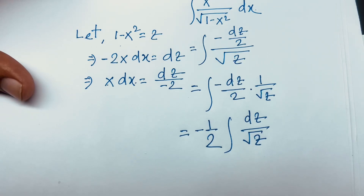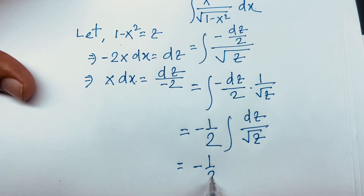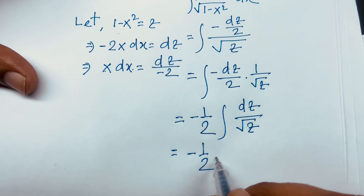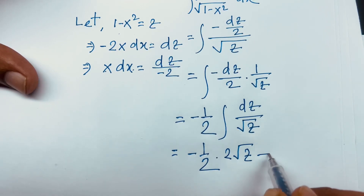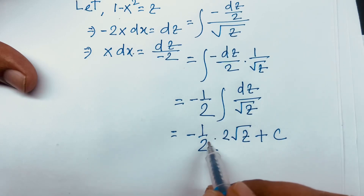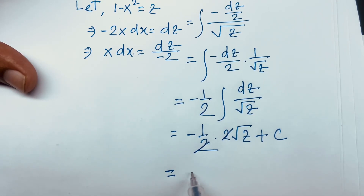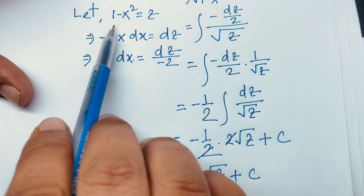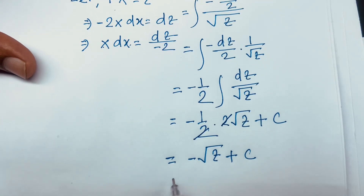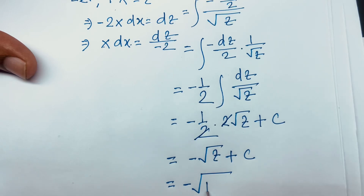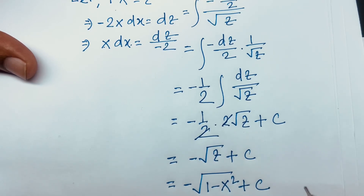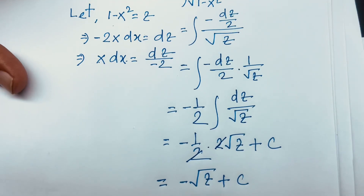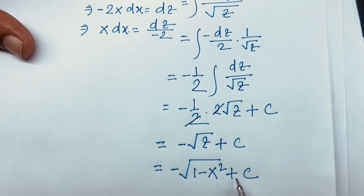Then I can say easily: here is minus one half, and the integral of dz over square root z equals 2 square root z plus c. So these two cancel, and we find out minus square root z plus c. But remember z is equal to 1 minus x squared, so we find out minus square root (1 minus x squared) plus c.